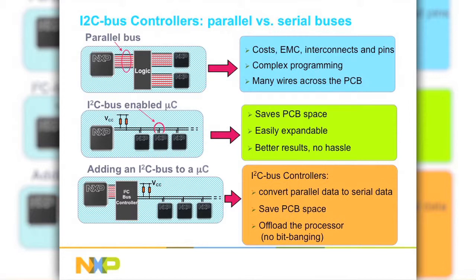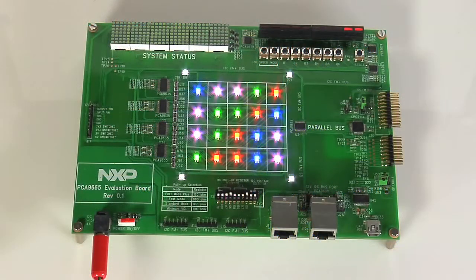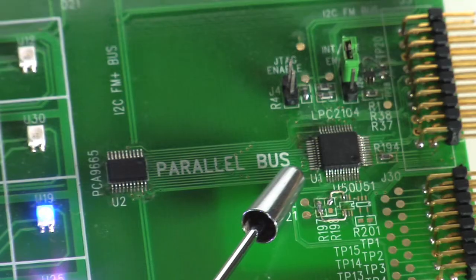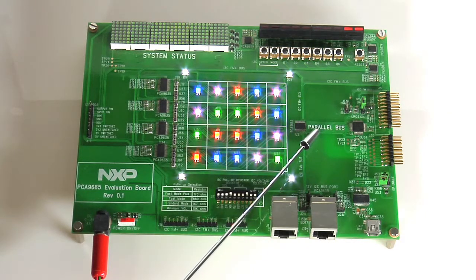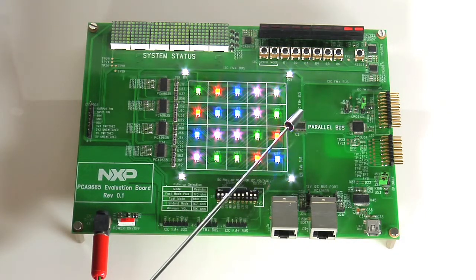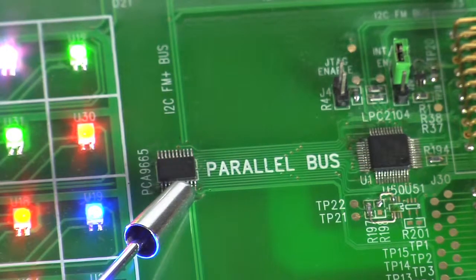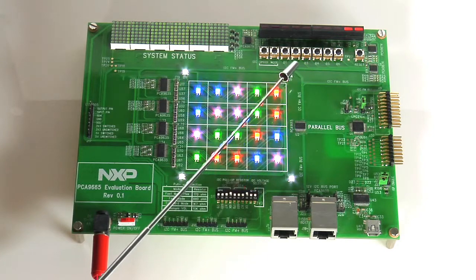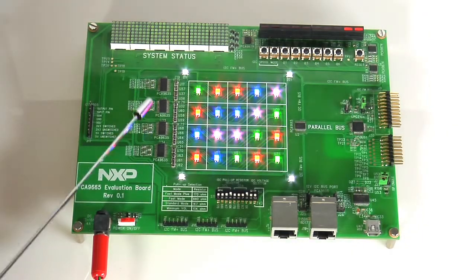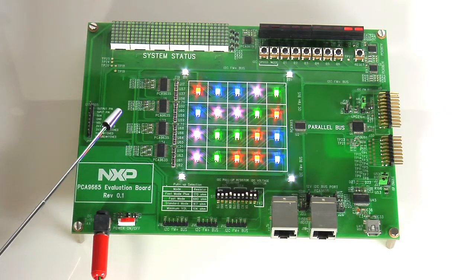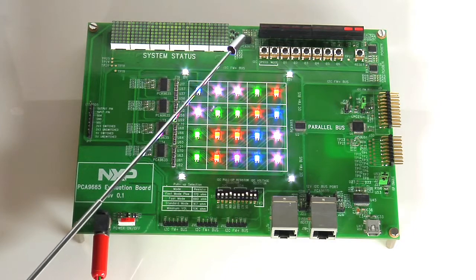The NXP family of bus controllers are used in applications where a microcontroller does not have an I2C port or an additional I2C port is needed. In this sample board, there is an ARM7 microcontroller with a hardware I2C bus port running at fast mode speed of 400 kHz. The parallel bus is connected to a PCA9665 I2C bus controller with master and slave capabilities and fast mode plus bus speeds of up to 1 MHz. The fast mode bus is connected to a single IO expander slave, while the fast mode plus bus is connected to 4 16-bit LED drivers, 3 segment drivers, and 2 IO expanders.